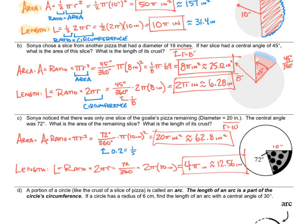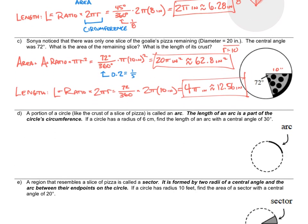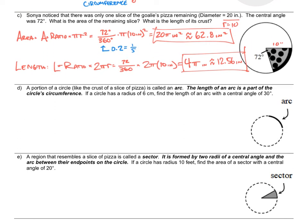Now let's formalize this with some new definitions. A portion of a circle, like the crust of a slice of pizza, is called an arc. The length of an arc is a part of the circumference — that's the ratio we've been multiplying by to get the portion of the length. So if a circle has a radius of 6, find the length of the arc with a central angle of 30 degrees. The central angle is this angle measure right here, and we've been dividing it by 360 to get the ratio.